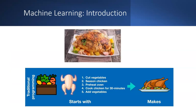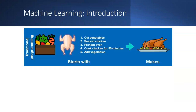Here is a daily-life analogy: traditional programming is like following a recipe step by step — cut the vegetables, season the chicken, preheat the oven, cook for 30 minutes, add vegetables. You specify each individual ingredient and step. In machine learning, things are more automatic.